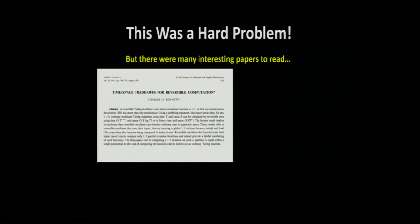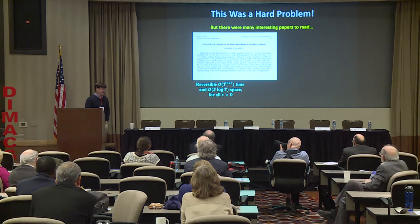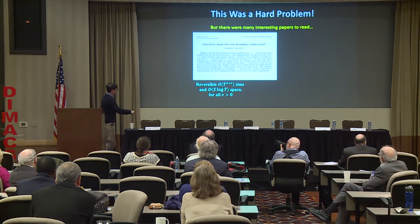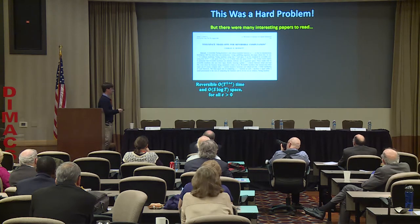There were many interesting papers to read. One was by Charlie Bennett, 'Time-Space Trade-Offs for Reversible Computation.' He showed that for time-t and space-s algorithms, you can get a reversible algorithm that runs in slightly polynomially more time — t to the 1 plus epsilon for any epsilon — and s log t space. So log t gives at most quadratic space overhead. That was one known simulation, and already pretty good.